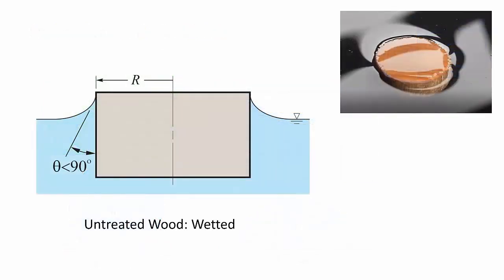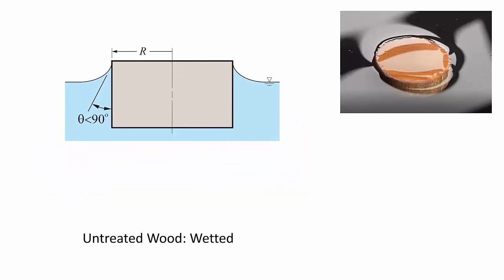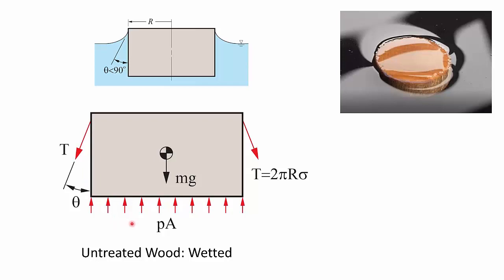So what does all this have to do with these floating wood discs? Well, water wets the untreated wood disc, as you can see in the video. This means that where the water meets the wood at the surface here, you get a contact angle less than 90 degrees and water is drawn up into the meniscus. But remember that there's a tension in this surface here. So if you look at the forces on the disc, we have, of course, the weight of the disc acting downwards.